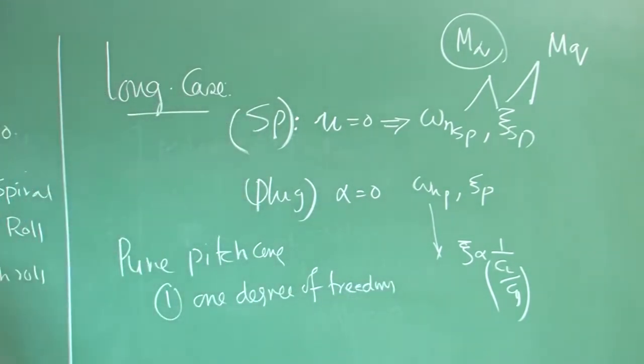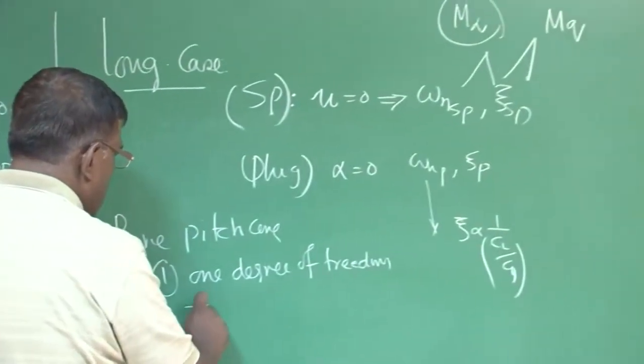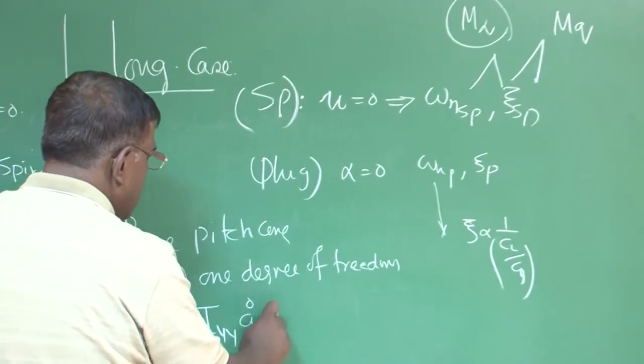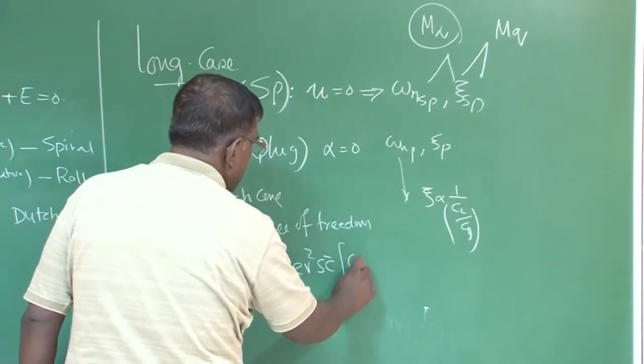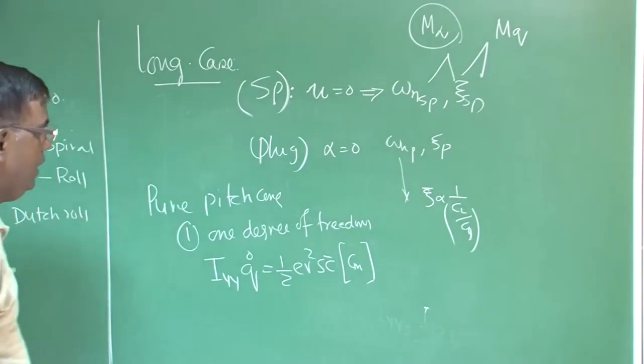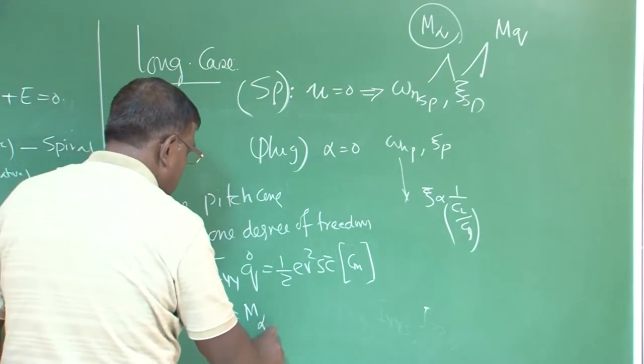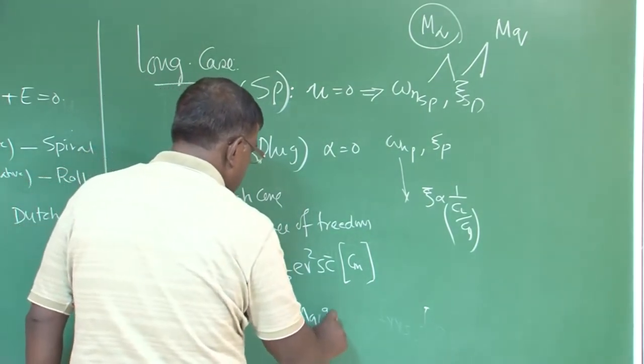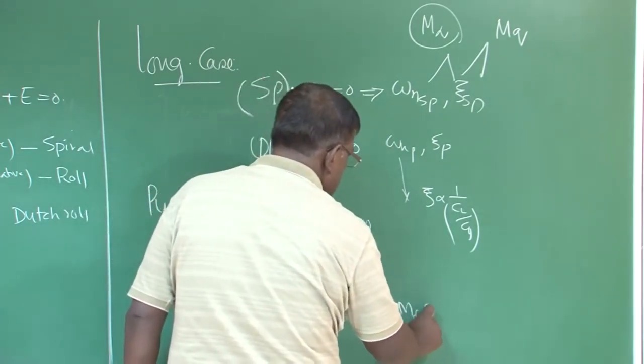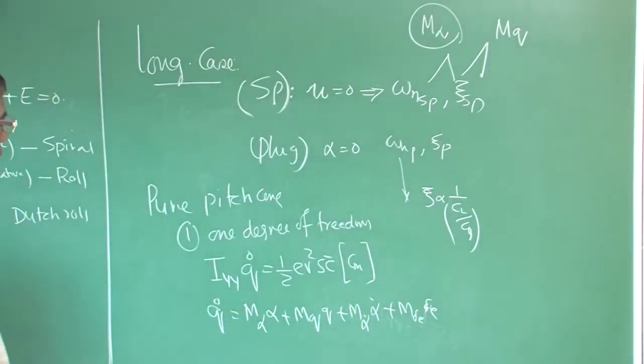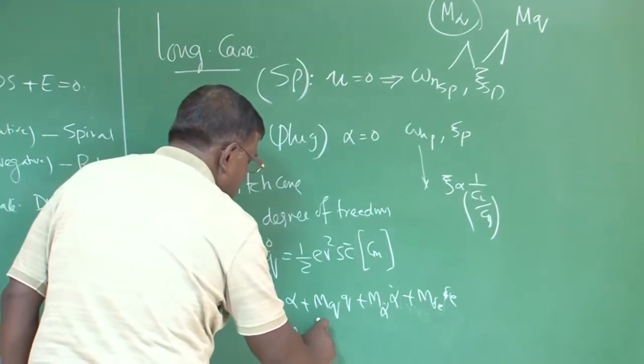After realizing this, we found, let us further do some simplification and then we went for a pure pitch case, where we assume only one degree of freedom. And that is the pitch, only pitching is allowed, no plunging. And there, we wrote equation like this: I_yy q dot equal to pitching moment, which is half rho v^2 s c_bar into C_m. And C_m is function of alpha, q, delta_e and alpha dot.